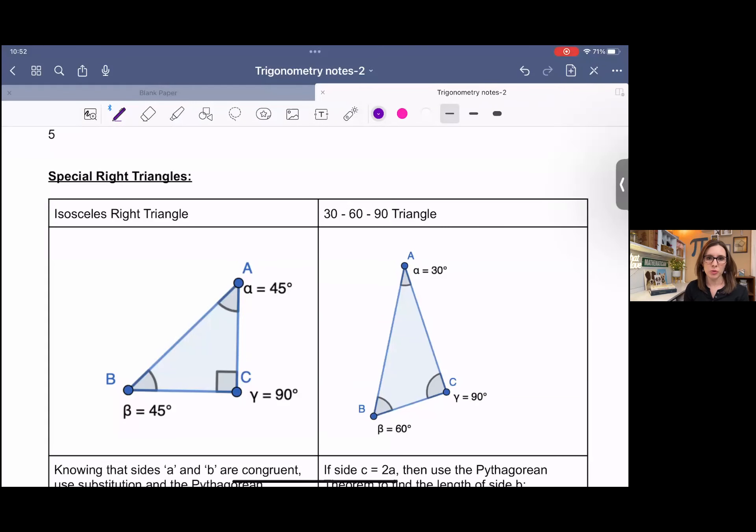These two types of triangles not only follow the Pythagorean theorem, but they also have their own little ratios that make solving for missing sides very simple.